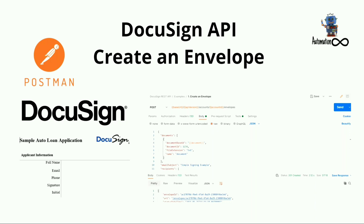In the last video, we discussed what is DocuSign, how it works, how to create a developer account, and how to import the Postman collection. We also saw how to call the Authenticate API to generate an access token, and how to use that access token to call the GetUserInfo API to get user information.